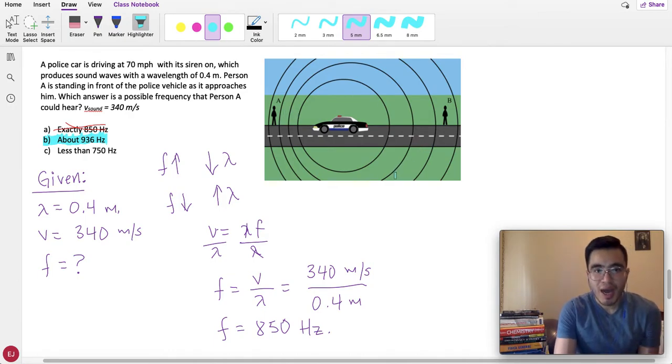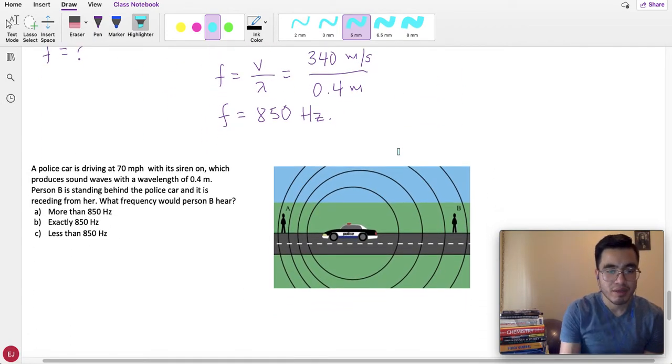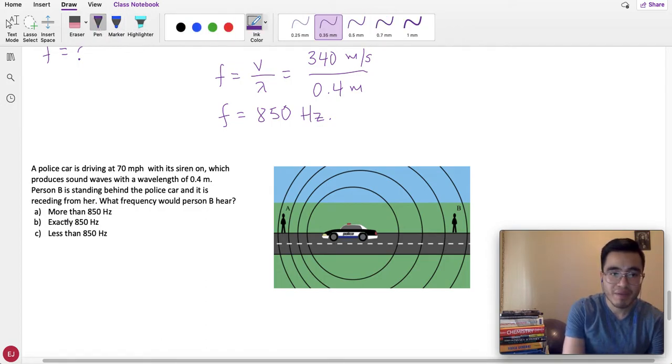Now, how about person B? The next question says, there's the same information. Now, if person B is standing behind the vehicle, so it's moving away from her, what is the frequency or possible frequency which person B would hear? Now, not 850, because the vehicle is not parked, so, process of elimination, not 850, now we have more than 850, less than 850.